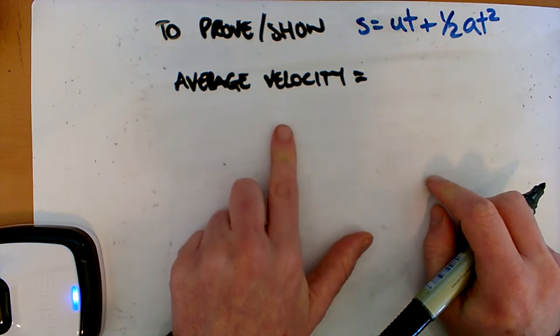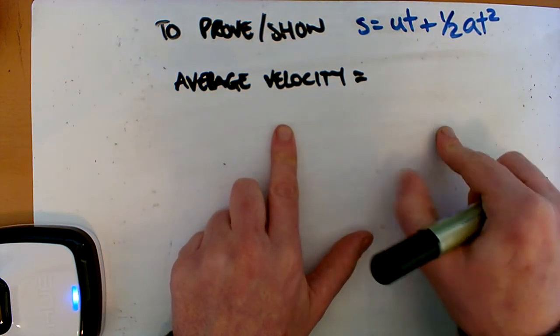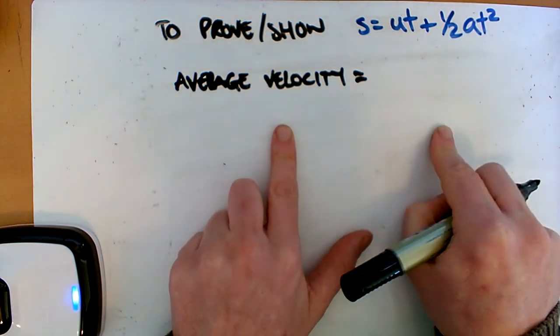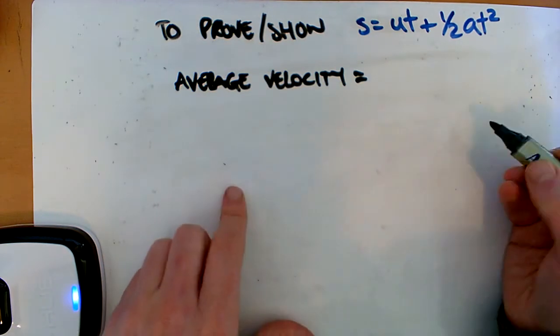So we usually start our start value, our final value, and then we divide it by 2 and we find our midpoint. And that's our average value. Okay, so we're going to do the same with this.